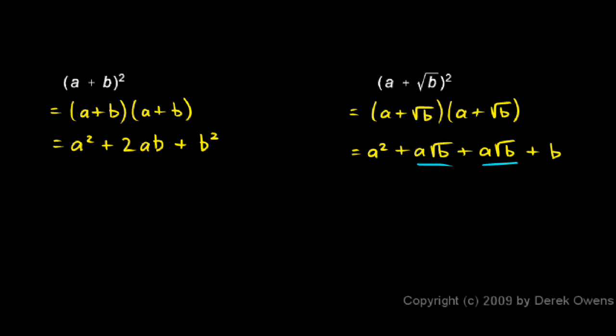Now these two terms in the middle are like terms, a times the square root of b and a times the square root of b. So they can be combined like we did over here. So we'll write our final answer as a squared plus two of these, so it's 2a times the square root of b plus b.